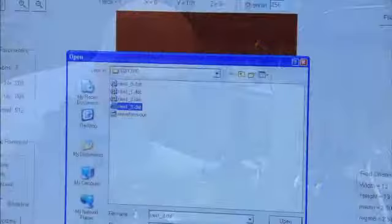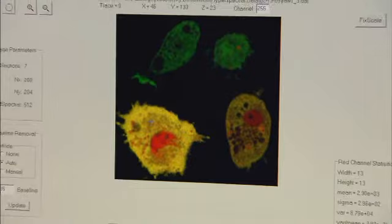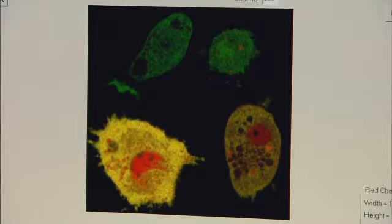This is the data file that we just acquired. Oh wow, look at that. That's pretty. That is awesome. So we can see in this cell, we can see both GFP signature and the Cherry signature.